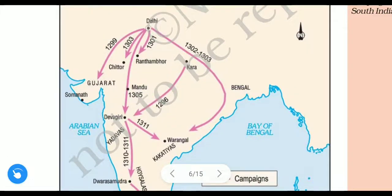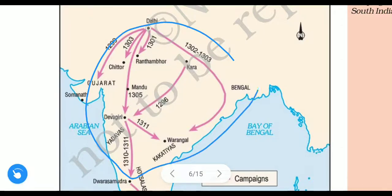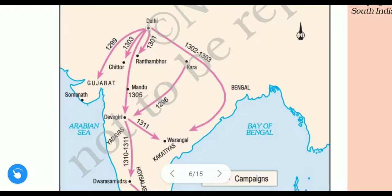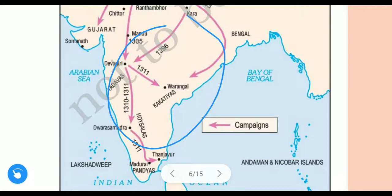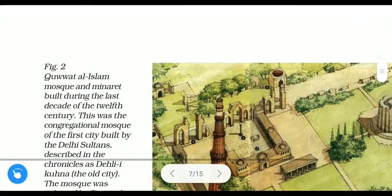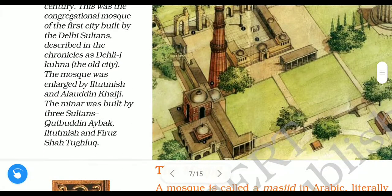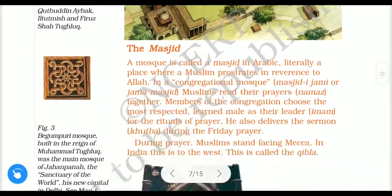A map is shown here to illustrate how the control of the Delhi sultanate extended over such a vast area and large part of the subcontinent.